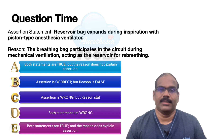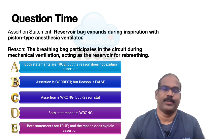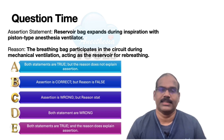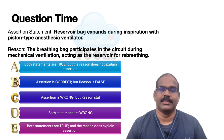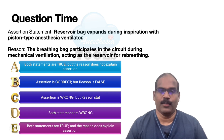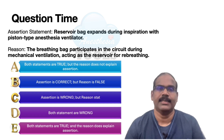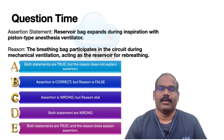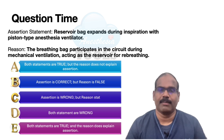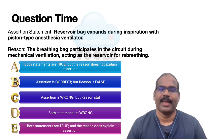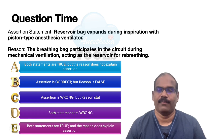Before we start, let's take a pre-test question. This pattern is assertion-reason type — you can pause the video, read the statements, and answer among the five options given below. The assertion statement is: the reservoir bag expands during inspiration with the piston type anesthesia ventilator. The reason statement is: the breathing bag participates in the circuit during mechanical ventilation, acting as the reservoir for pre-breathing.